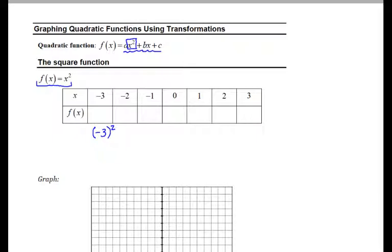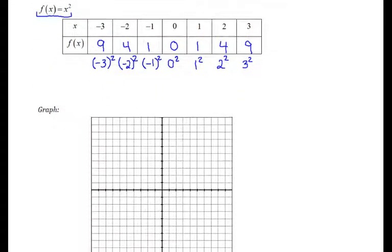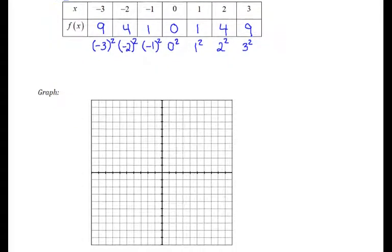That way I can see that negative 3 quantity squared gives me positive 9. I'm going to go ahead and fill in this whole table so that I have y values 9, 4, 1, 0, 1, 4, 9. I'm going to plot these points on my grid and see what the graph looks like.